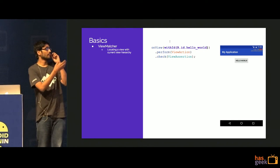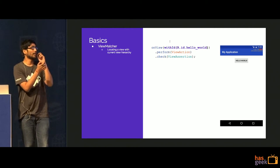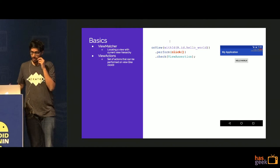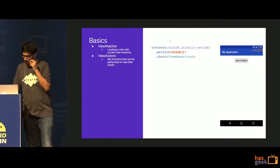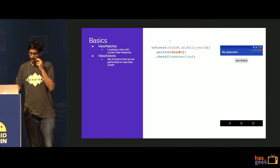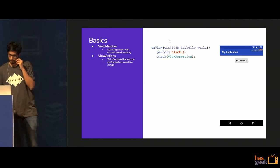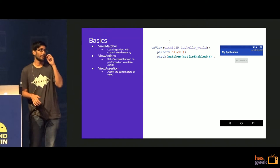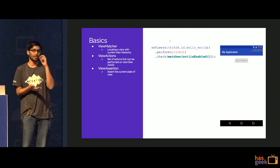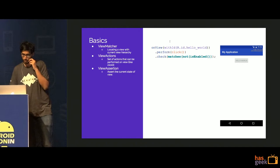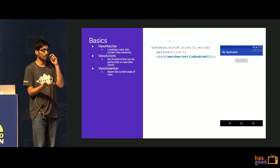You send the resource identifier R.id.helloWorld and it gives you the hello world button. Then you can click the button — it can be any action like long click or scroll based on list view. Finally, you can verify that the button was disabled after click, and that way you make sure nothing is broken in your production app. View assertion basically asserts the current state of your UI.